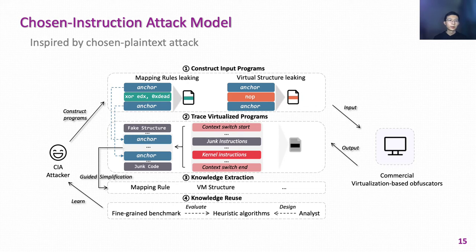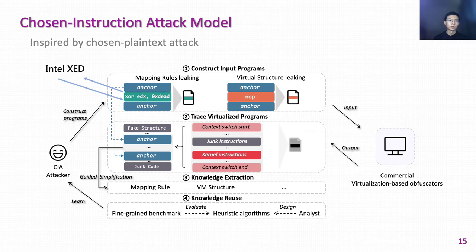As shown in the picture, the knowledge-leaking code is inserted between two anchor instructions. By searching for the anchor instructions, the attackers can quickly locate virtualized knowledge-leaking code from a long execution trace. To extract complete mapping rules, we use Intel XED to generate different categories of valid instructions as knowledge-leaking code. With the help of anchor instructions and guided simplification, CIA attackers can automatically extract knowledge from obfuscators.